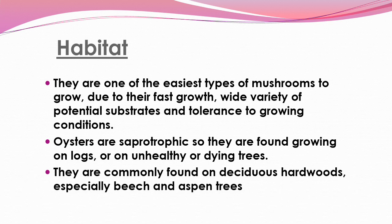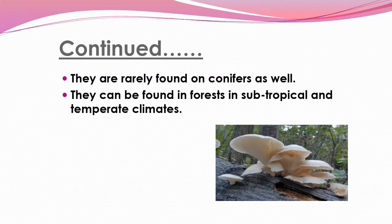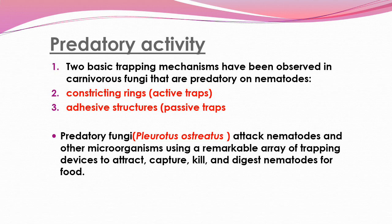Regarding their habitat, oyster mushrooms are one of the easiest types of mushroom to grow due to their fast growth, wide variety of potential substrates, and tolerance to growing conditions. They are saprotrophic, so they are found growing on logs or on unhealthy or dying trees, commonly found on deciduous hardwood especially beech or aspen trees.